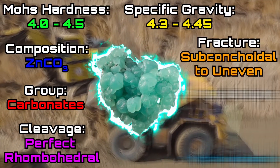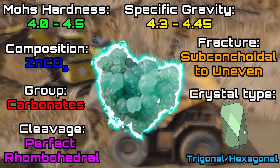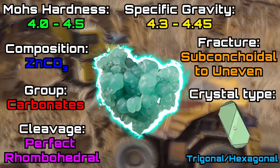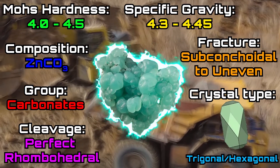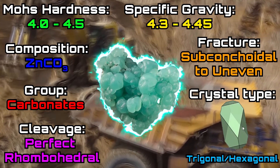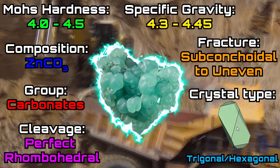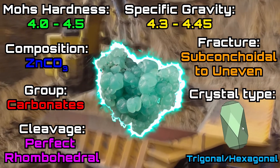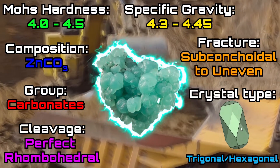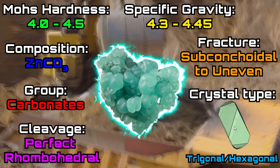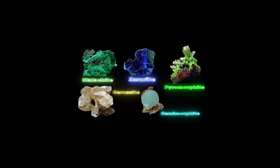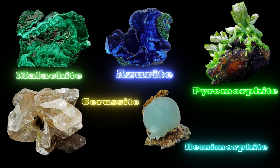In a nutshell, smithsonite is a carbonate group mineral consisting of zinc carbonate units. It has perfect rhombohedral cleavage, a Mohs hardness between 4.0 and 4.5, a specific gravity between 4.3 and 4.45, a subconchoidal to uneven fracture, and a trigonal crystallization.